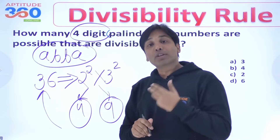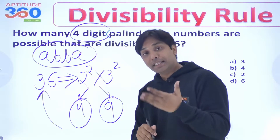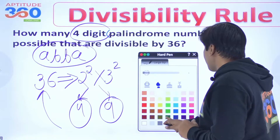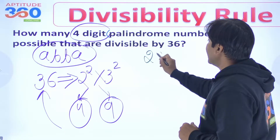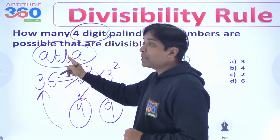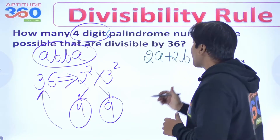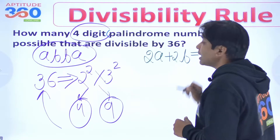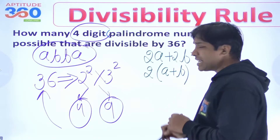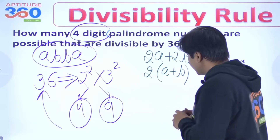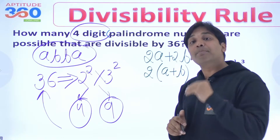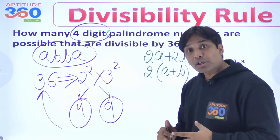9 ka divisibility rule hota kya hai? Sum of digits must be divisible by 9. So if we add all the digits here, sum of digits would look like 2 times A plus 2 times B — because it's A + B + B + A. Now this should be a multiple of 9.